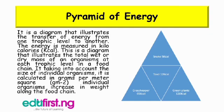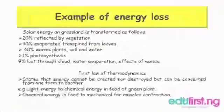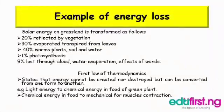So we're going to look at an example of energy loss. Solar energy in grassland is transformed as follows: 20% reflected by the vegetation, 30% evaporated and transpired from leaves, 40% warms plants, soil, and water, 1% goes to photosynthesis, and the last 9% is lost through cloud, water evaporation, and effect of woods.